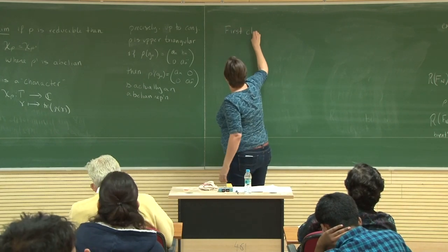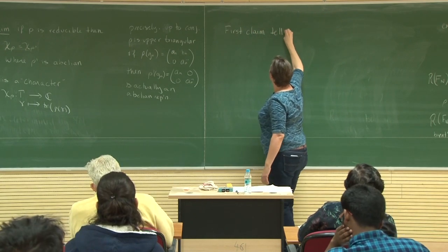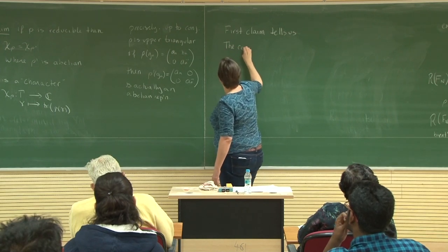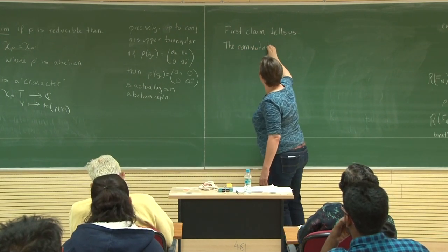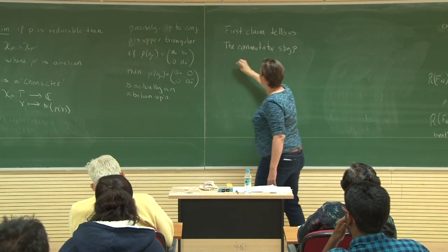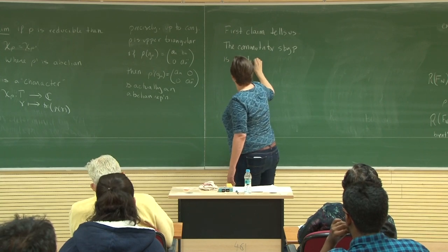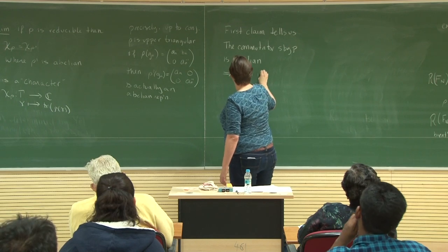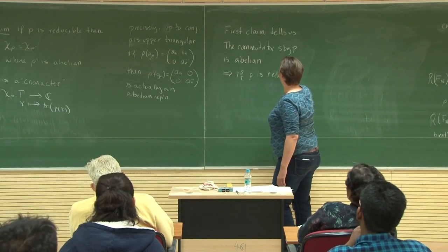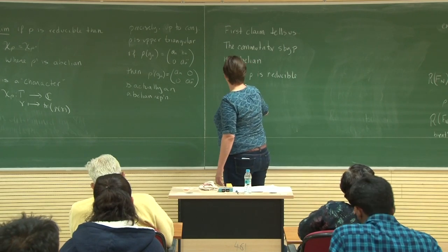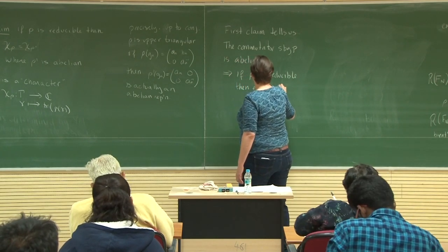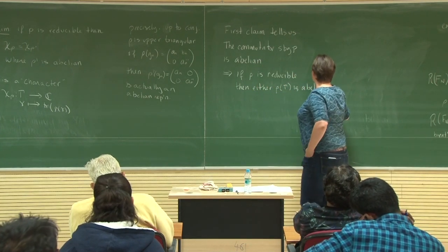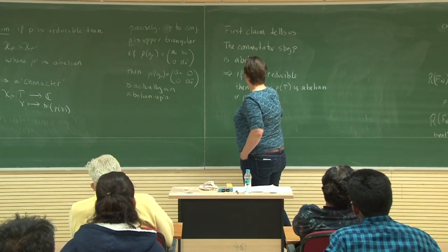The first claim tells us that the commutator subgroup is abelian, and this implies that if rho is reducible, then either rho(gamma) is abelian or metabelian.